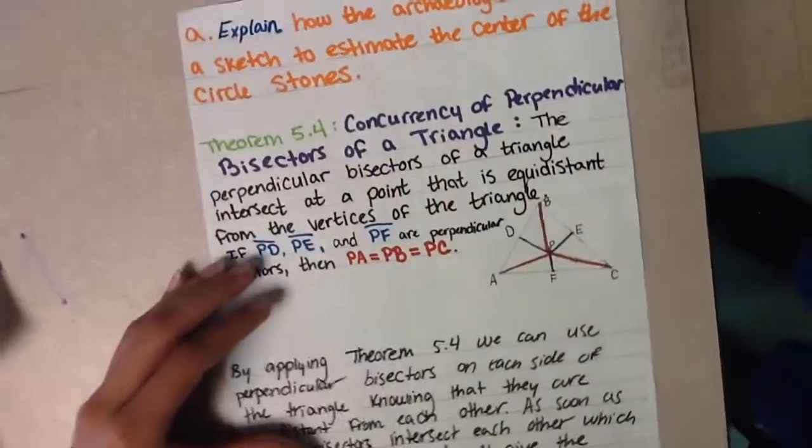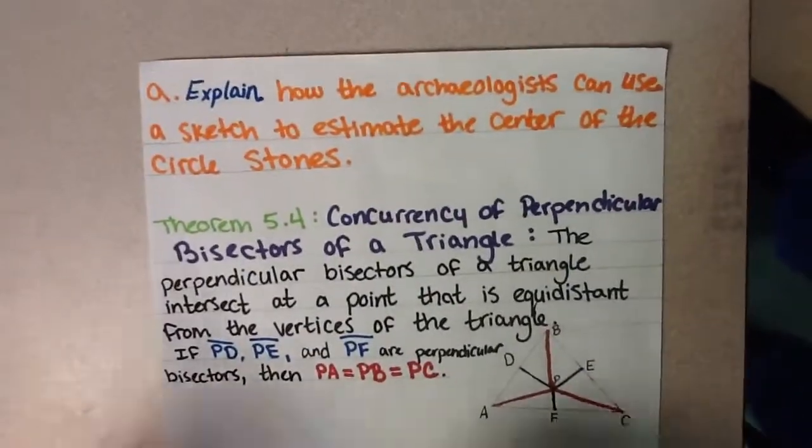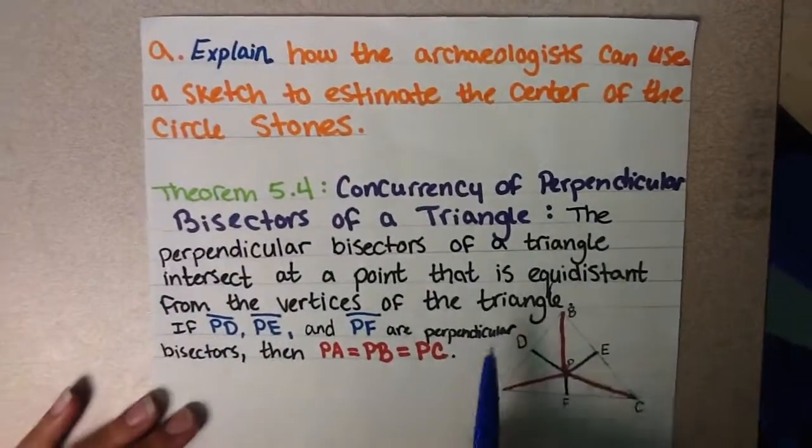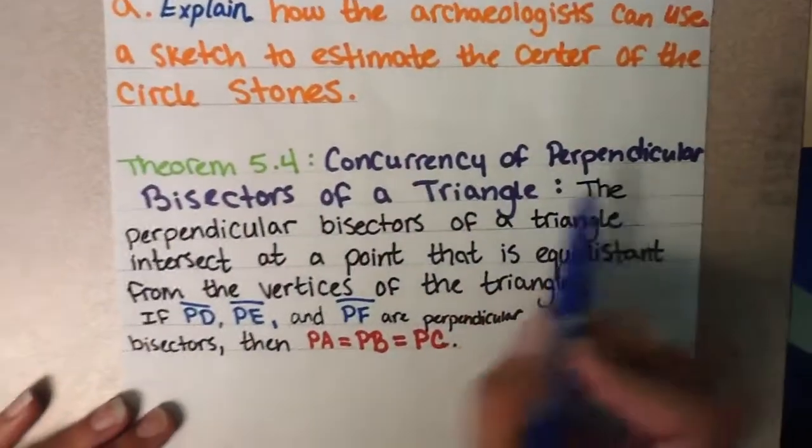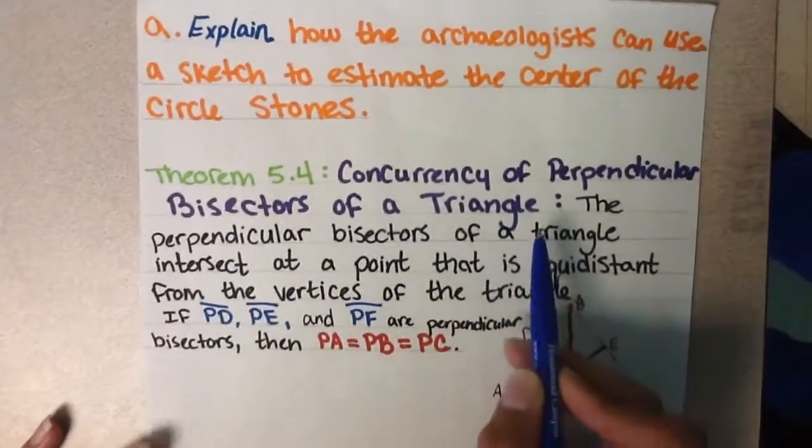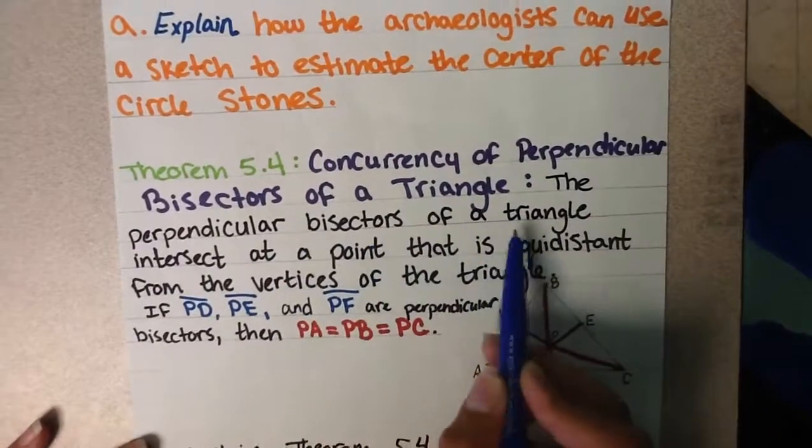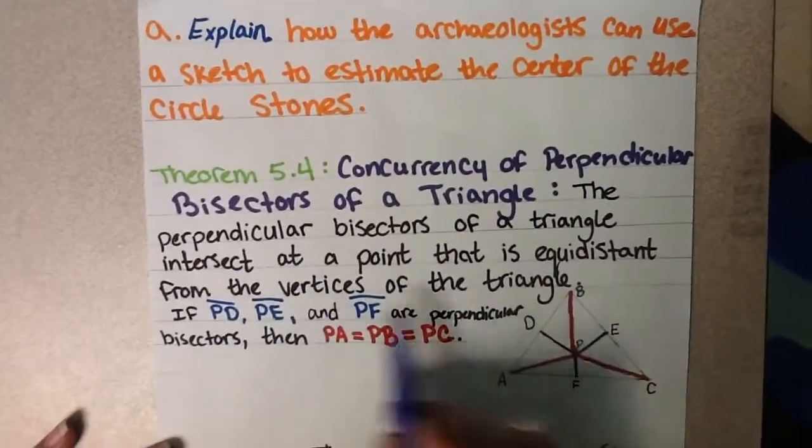For question A, really there's not much work you have to do. It's all about applying a theorem, which is theorem 5.4, and it deals with the concurrency of perpendicular bisectors of a triangle. This states that the perpendicular bisectors of a triangle intersect at a point that is equidistant from the vertices of the triangle.